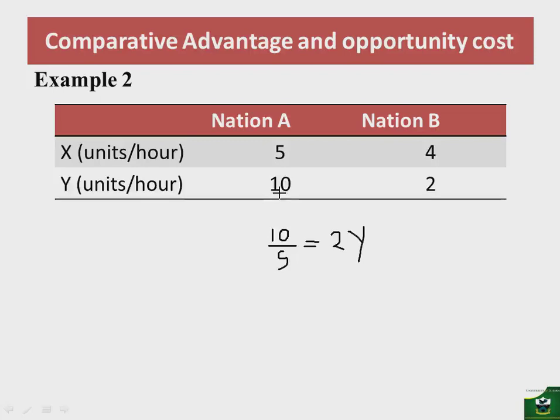So the opportunity cost of X in nation A is 2Y. For nation A to produce an additional unit of Y, it has to give up some amount of X. The foregone is 5 units of X divided by the gain of 10 units of Y, giving us 1/2 X — the opportunity cost of Y in nation A.